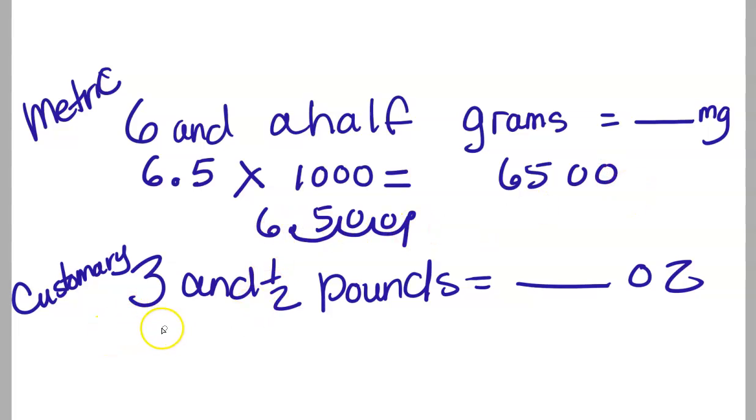In U.S. customary, if someone says 3 and a half pounds, it can be written using a fraction. So you can either say 3½ pounds, I want to convert that to ounces. I would say 3½ times how many ounces in a pound? 16, and then I would do the math that way.